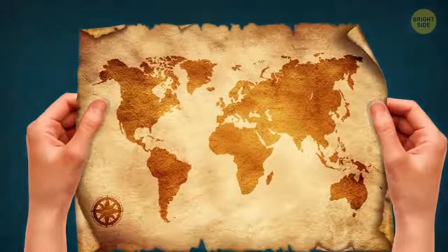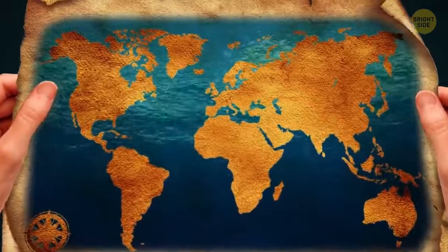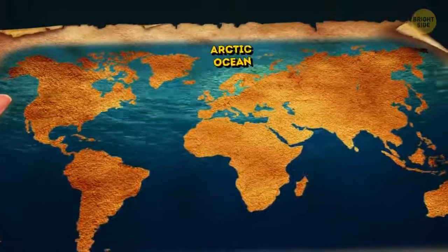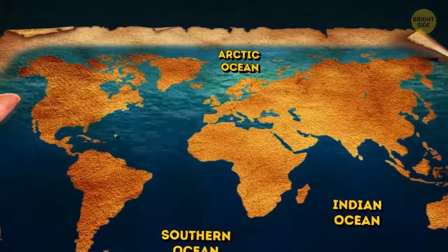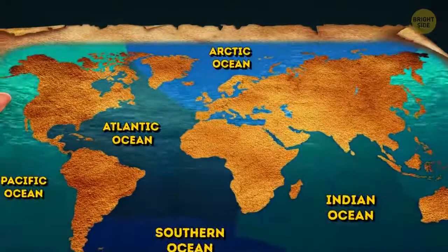So, when you look at the seas and oceans on the map, you might think that they just flow into each other. It seems like there's only one big ocean, and people just gave different names to its parts. Well, you'll be amazed how vivid the borders between them are.